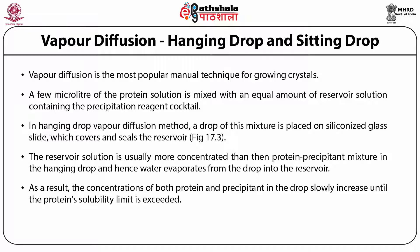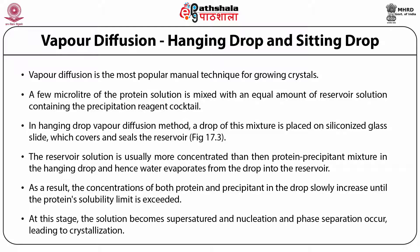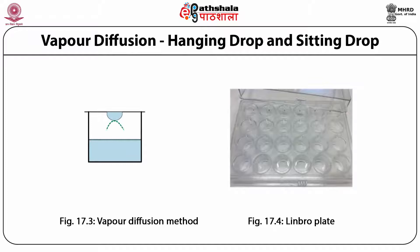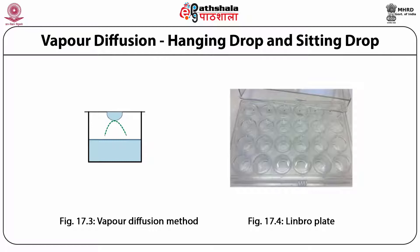As a result, the concentrations of both protein and precipitant in the drop slowly increase until the protein solubility limit is exceeded. At this stage, the solution becomes supersaturated and nucleation and phase separation occur, leading to protein crystallization. Figure 17.3 shows the vapor diffusion method technique. The droplet shown at the top contains the cocktail and protein solution from which protein crystals can be obtained after supersaturation.